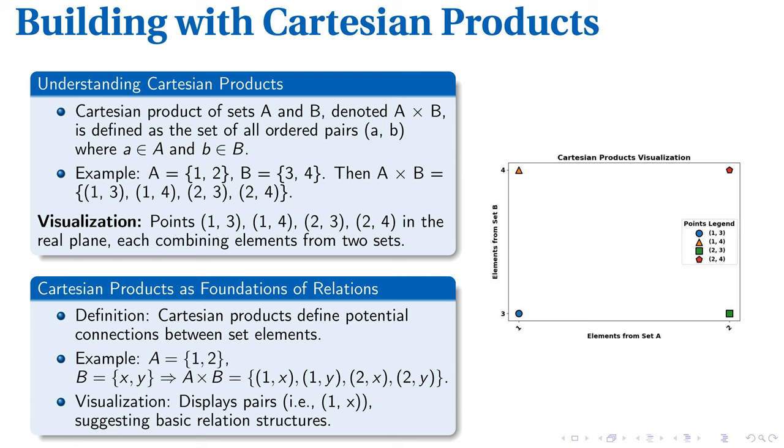With elements 1, 2 and 3, 4 respectively, we form the Cartesian product, an ordered collection of pairs: (1,3), (1,4), (2,3), (2,4).